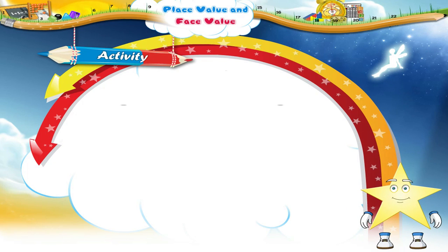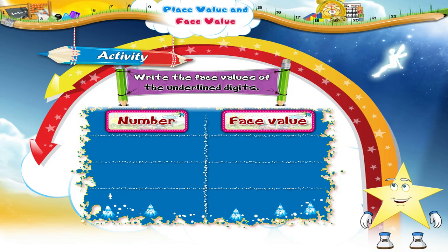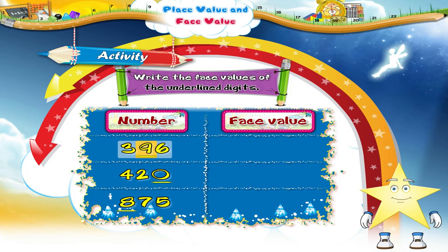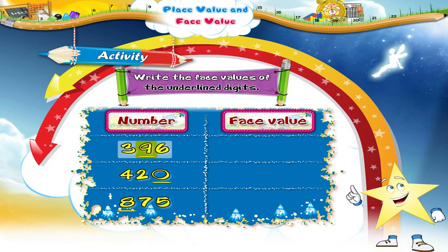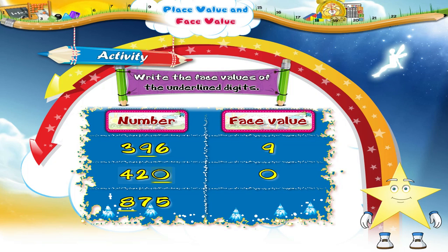Now let us revise. Write the face values of the underlined digits. In three hundred and ninety-six, the face value of nine is nine. In four hundred and twenty, the face value of zero is zero. In eight hundred and seventy-five, the face value of eight is eight.